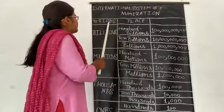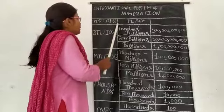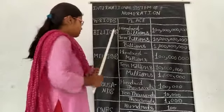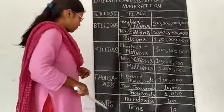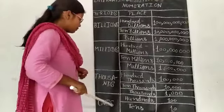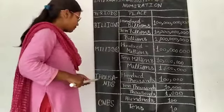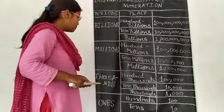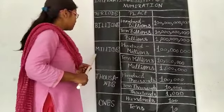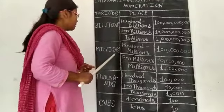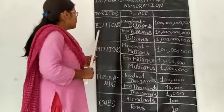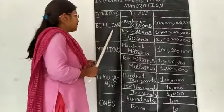Periods and place values. First period: ones. Second period: thousands. Third period: millions. Fourth period: billions.